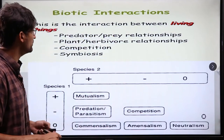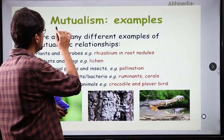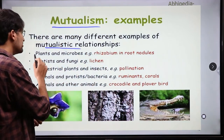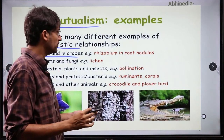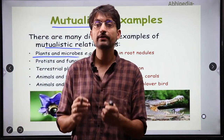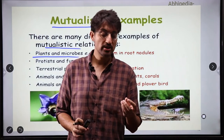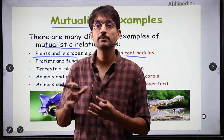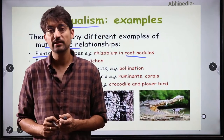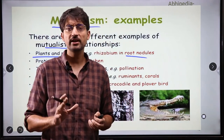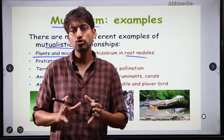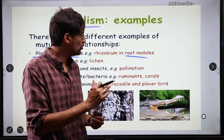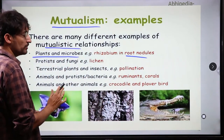Let's understand with examples. If you look at mutualism, there are many different examples. For example, plants and microbes are in mutualism. You will have heard about nitrogen fixation. Plants have root nodules, and in those roots there are bacteria such as Rhizobium which can fix atmospheric nitrogen. The bacteria lives inside the plant and the plant gets nutrients in return. So we put this plant-microbe relationship in the mutualism category.